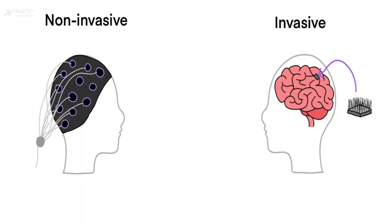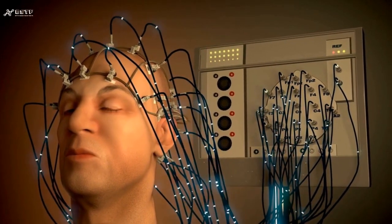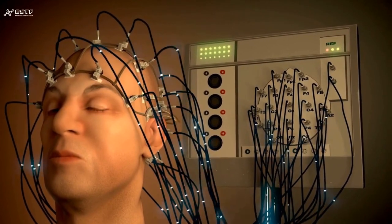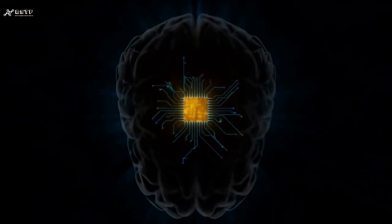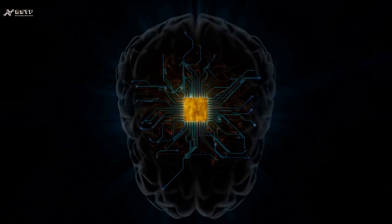There are two main types of BCIs: non-invasive and invasive. Non-invasive BCIs, like headsets, use electrodes placed on your scalp to detect brain waves. Invasive BCIs involve implanting electrodes directly into the brain, offering a more precise signal but requiring surgery.